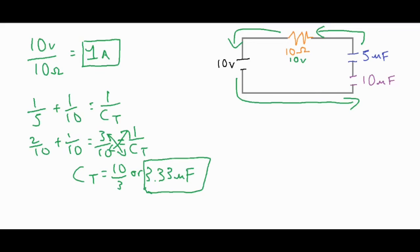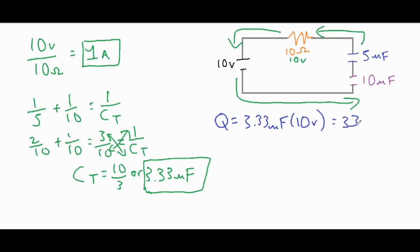For two capacitors wired in series, they have the same exact charge but different potential differences across each one. We find the total charge by taking the total capacitance times the voltage: 3.33 microfarads times 10 volts gives a total charge of 33.3 microcoulombs. Each capacitor individually is charged with 33.3 microcoulombs — that total charge is the individual charge for each one.